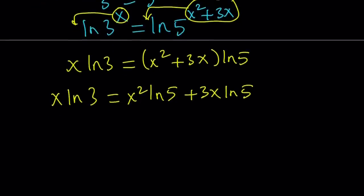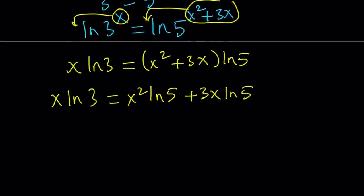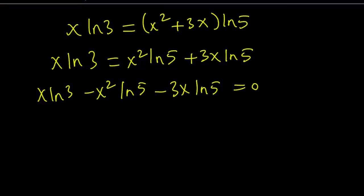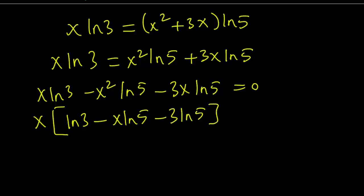So, in an effort to factor this, let's go ahead and put everything on the same side. x ln 3 minus x squared ln 5 minus 3x ln 5 equals 0. We could definitely put the x, we could keep the x squared plus 3x together, but that's not what I want to do. I want to take out an x. I want to take an x out of this expression. Why? Because that's going to give us one of the solutions as before. So, let's go ahead and take out x. We're going to get ln 3 inside minus x ln 5 minus 3 ln 5. Great. And that's equal to 0.